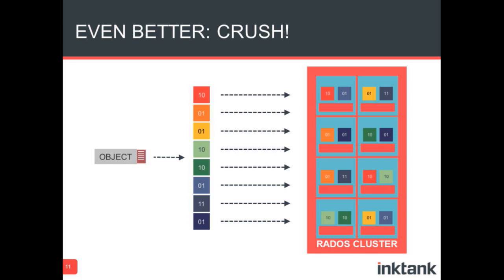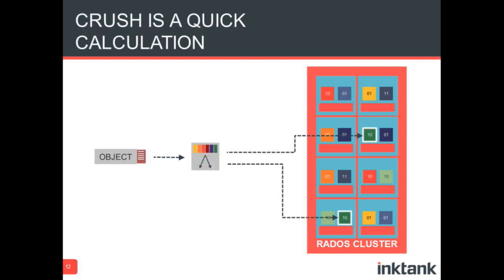Ceph uses an algorithm called CRUSH, which is calculated on the client based on a policy. You take the object, split it into a number of groups, then use CRUSH to determine where those objects live inside the cluster. CRUSH is a C function and you pass it two things: the cluster map — a data structure of which nodes are in and out and up and down — and the crush map, which is the hierarchy of your cluster and a series of policies, like 'never put two copies of the same object in the same failure domain.' The cluster constantly uses CRUSH to rebalance data, and clients use this function to figure out where to connect. As long as the cluster map and crush map are the same, it will have the same result.